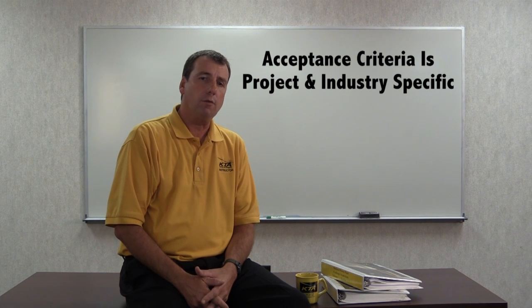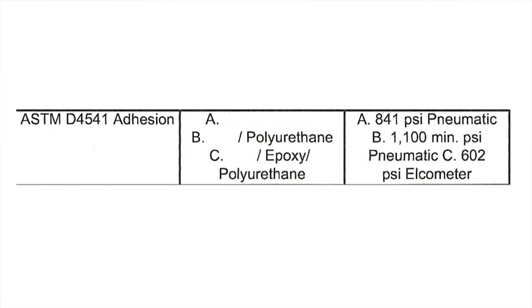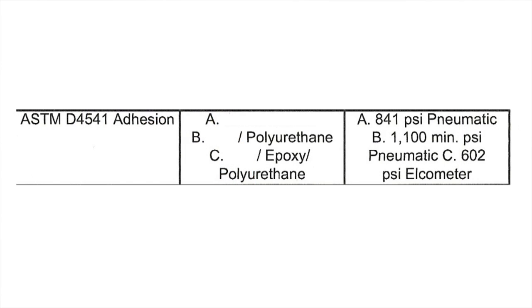However, project specifications may require a minimum adhesion value as a contract requirement, and coating manufacturers will often report an adhesion value on their product data sheets. Sometimes this value is adopted into a project specification.